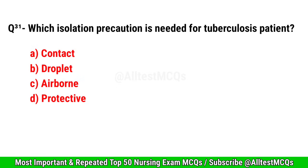Question No. 31. Which isolation precaution is needed for a tuberculosis patient? Correct option is C. Airborne.